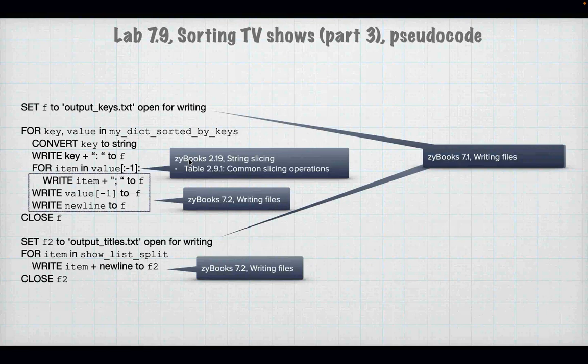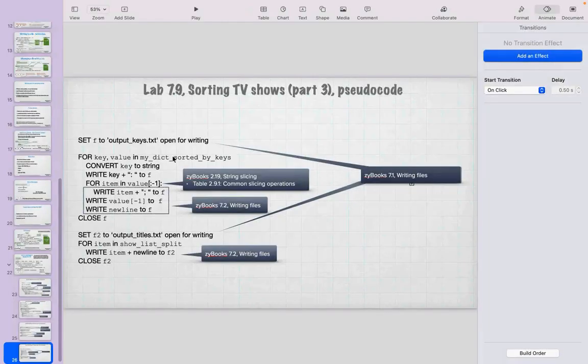You're going to have openkeys.txt, which is going to have the keys. And you're going to have output titles, which is going to have the titles. So that's a lot of stuff to do to get to this part, which is the new part. So refer back to this when you're doing 7.9.